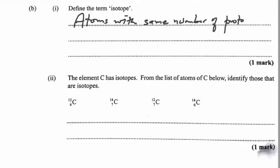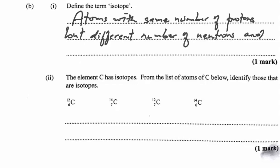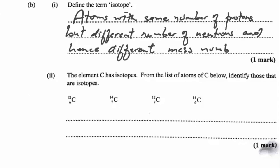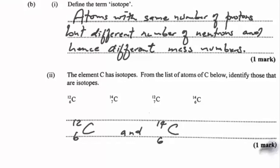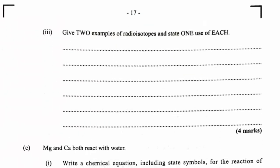Isotopes are atoms of the same element with the same number of protons but different numbers of neutrons and hence different mass numbers. From the list of atoms of carbon, the isotopes would be carbon-12 and carbon-14 — we must ensure the atomic number is 6, since that is what makes carbon carbon. The carbon with 7 protons is a distraction to check if you truly understand the definition.